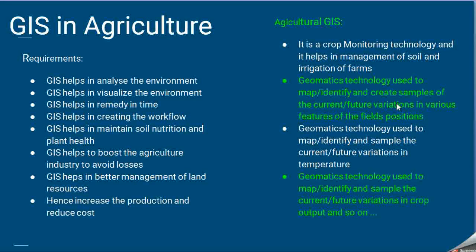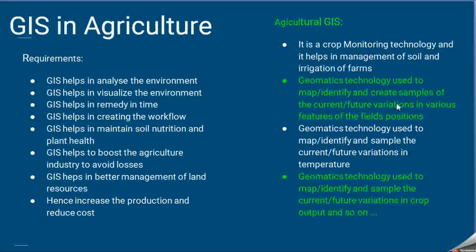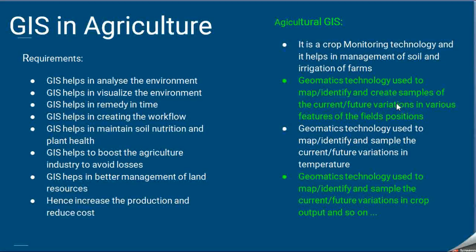Agricultural GIS is a crop monitoring technology that monitors crops, manages soil, and improves irrigation of farms. It uses geomatic technology to create maps, identify problems, and create samples of current and future variation of various field features. For example, it can determine temperature at various field positions, monitor crops, identify problems in specific sections of the field, and apply remedies before losses occur.